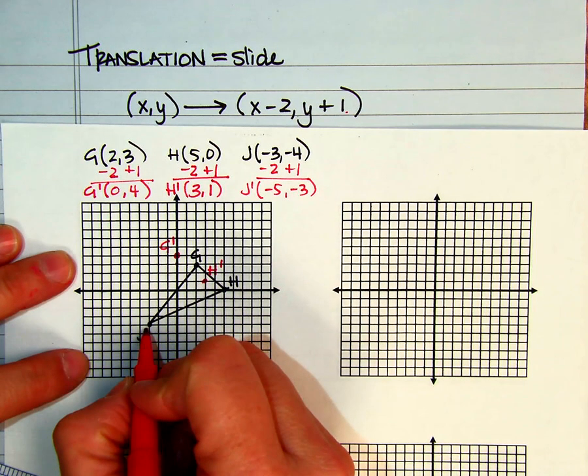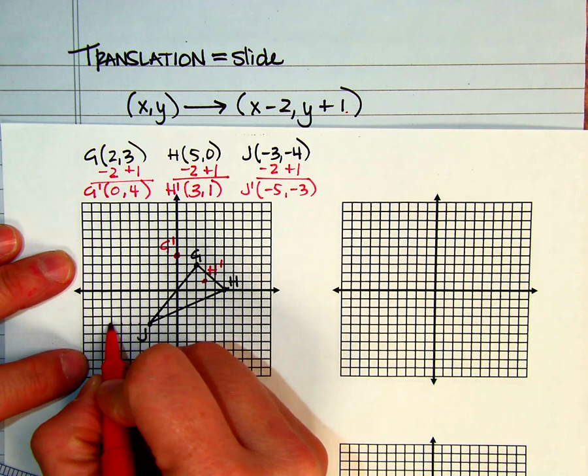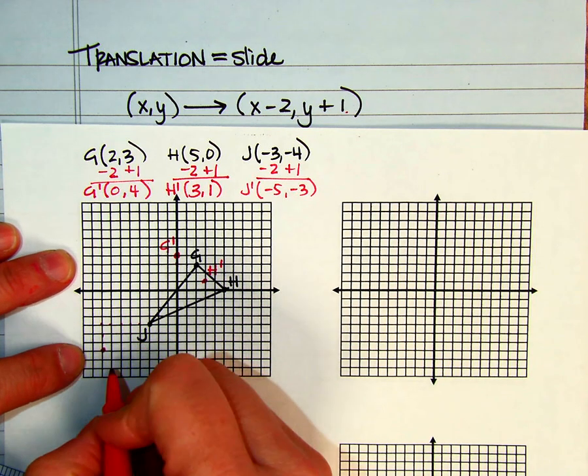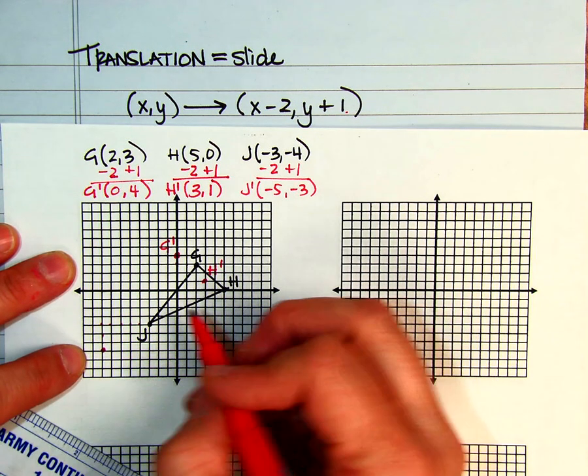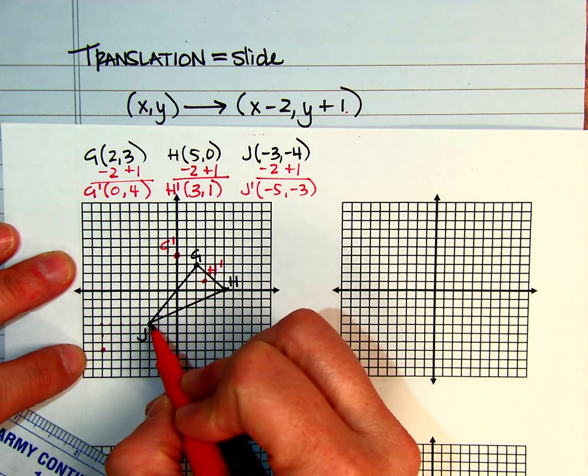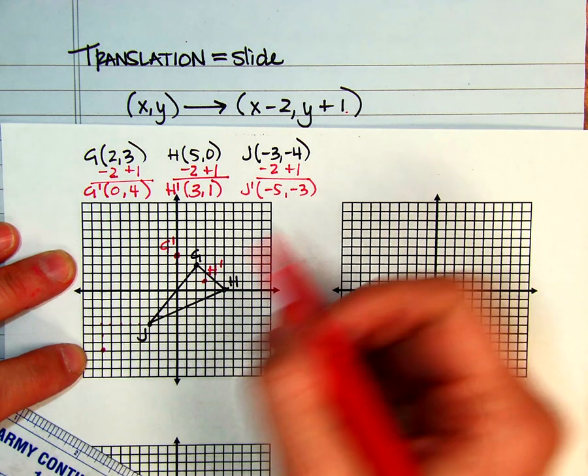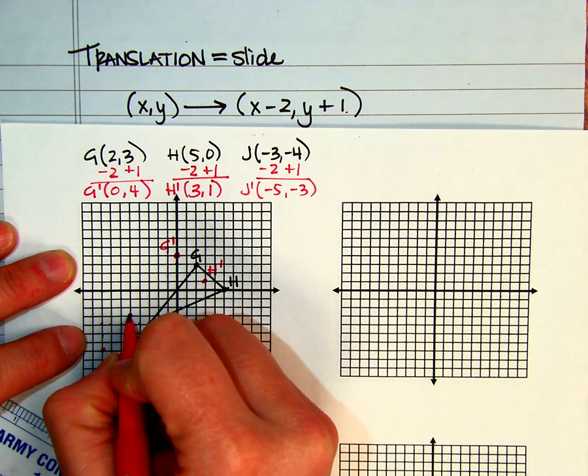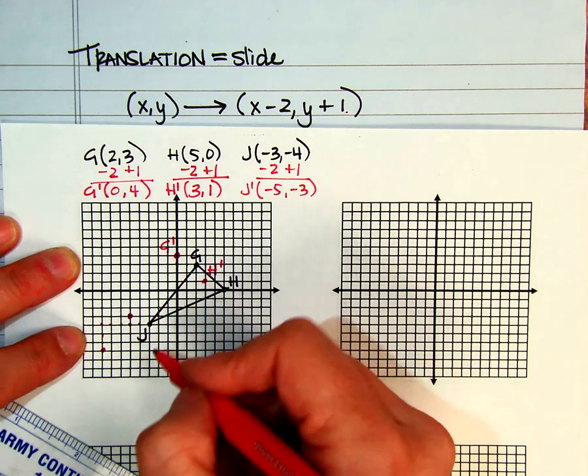So J, I would go to the left 2 and up 1. And that would be... something's wrong. Oops, I'm doing this wrong. It should be to the left 2 and up 1. I was using my new coordinates anyway. So that would be my J prime.